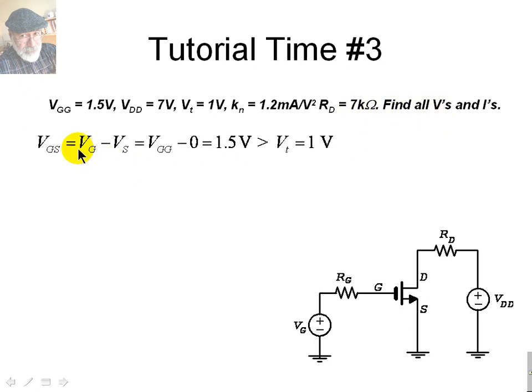Well, VGS is computed the same way, and it turns out to be only 1.5 volts. VGG. It's still above VT, so the transistor is not in cutoff mode. There is current in the channel. Well, but is it in triode mode, or is it in saturation mode? Let's see.